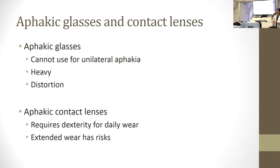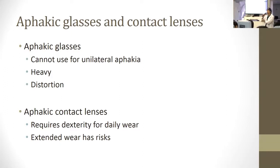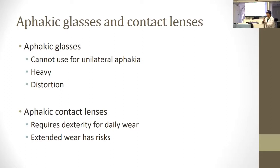Aphakic glasses and contact lenses are a common way to correct aphakia. Aphakic glasses have downsides: they cannot be used in unilateral aphakia because the image size would be very different in one eye compared to the other, causing anisometropia which would be very confusing. The glasses are also often very heavy and can cause distortion around the edge of the lens. With aphakic contact lenses, for daily wear you need to be able to put them in and out, and extended wear has risks.